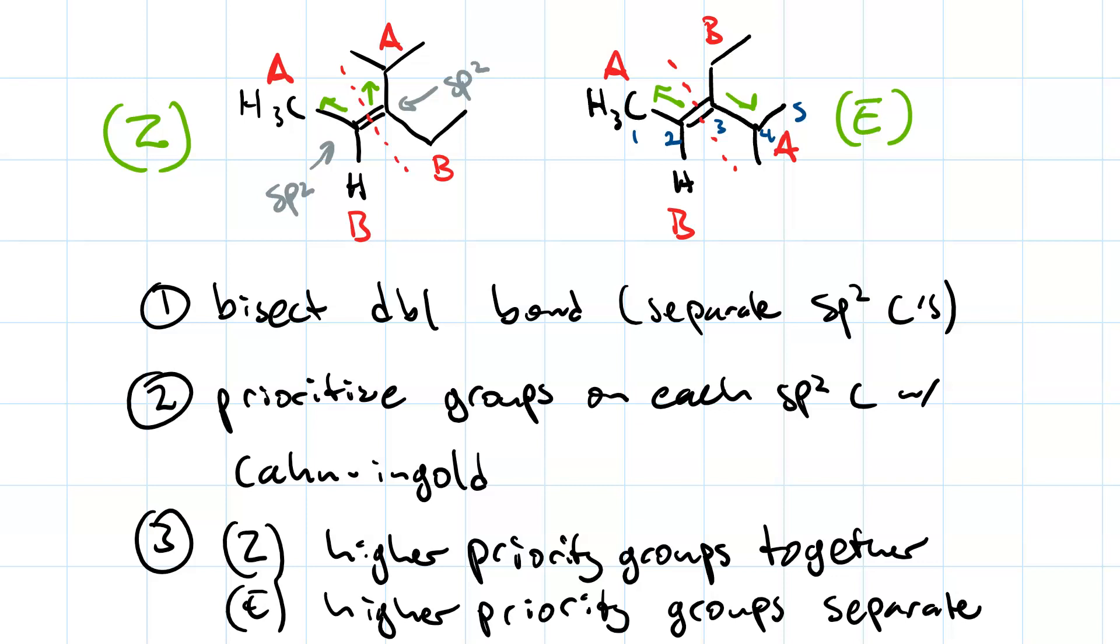I've got an ethyl group on carbon-3 and I've got a methyl group on carbon-4. So, this is E-3-ethyl-4-methylpent-2-ene.